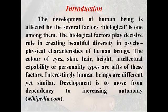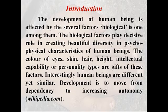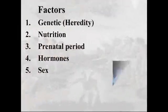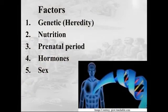Development is to move from dependency to increasing autonomy. It means a small infant is fully dependent on her parents for every task, but when that infant grows or develops, they become autonomous. There are five factors we are going to cover in this video: genetic factors or hereditary factors, nutrition, prenatal period, hormones, and sex or gender.